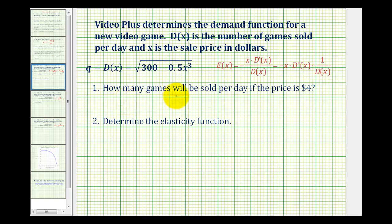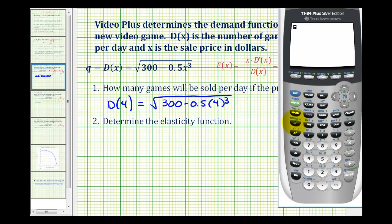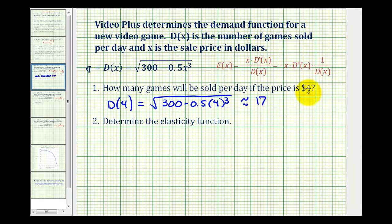So the first question is how many games will be sold per day if the price is $4? For this, we don't need the elasticity function. We can just replace x with 4 in the demand function. So we'd have D of 4 equals the square root of 300 minus 0.5 times 4 to the third. So we'll use the calculator to evaluate this. So this means at the price of $4, we can expect to sell 17 games per day.